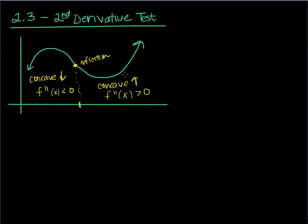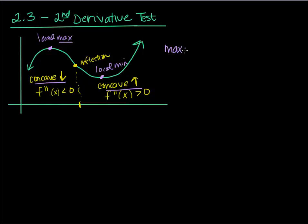So if you notice, what does the second derivative have to do with maximums and minimums? Well, right here we have a relative or local max, and down here we have a local min. The interesting thing is when I have a maximum, my function is going to be concave down — it must be. For it to be the largest point, everything has to go below it. And for a minimum, I'm concave up. So if we have a max, the second derivative at that point must be less than zero. And to have a min, the second derivative must be greater than zero.